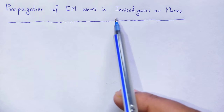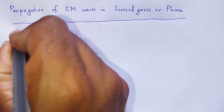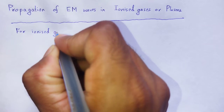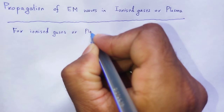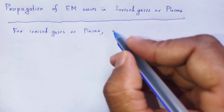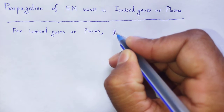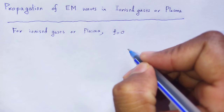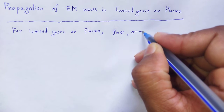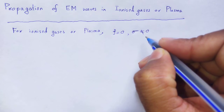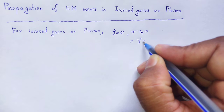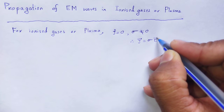First, we write the conditions for ionized gases or plasma. The conditions are: charge density equals zero, conductivity not equal to zero. Therefore, conductivity has current density J which is equal to sigma E, not equal to zero.